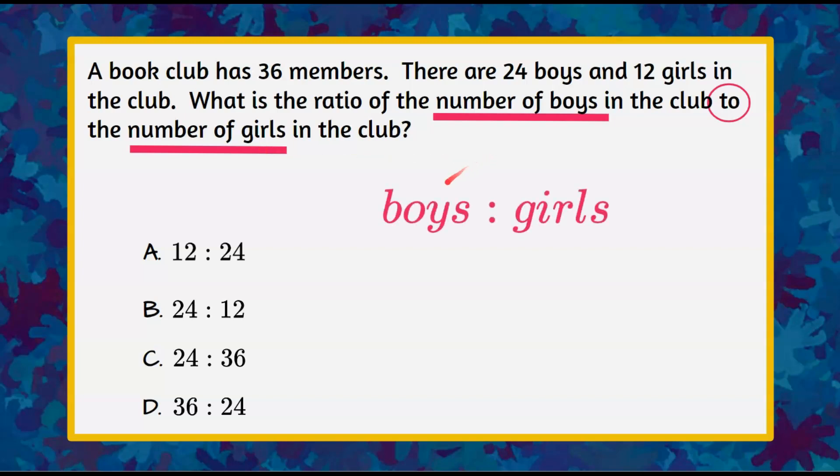So we're told that we're going to do boys to girls and we can see that our ratios are all written with a colon, and you can do a ratio three ways: a colon, the word 'to', or with a fraction bar.